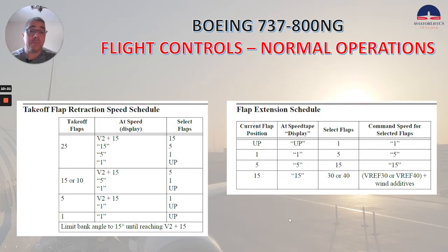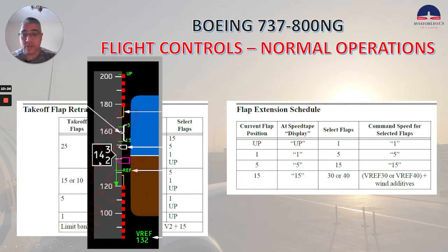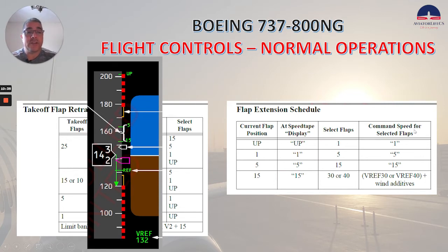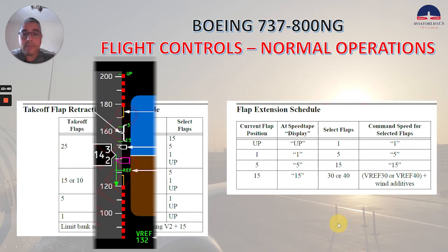Now for the flap extension schedule — shown in this picture here — if you have the current flap position up, at a speed tape display of up, you select flaps one. Command speed four, then select flaps one.